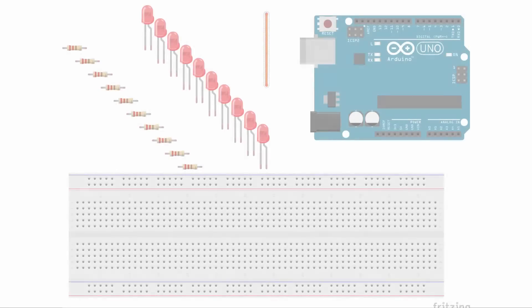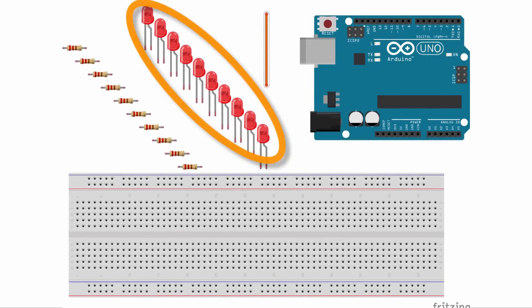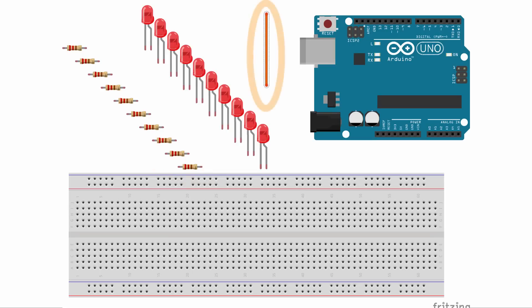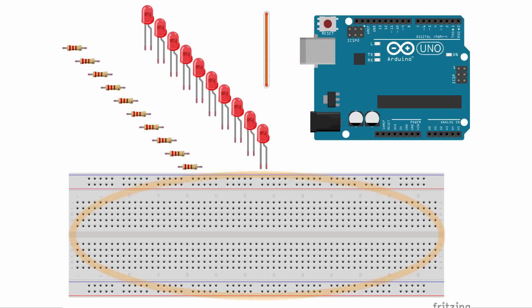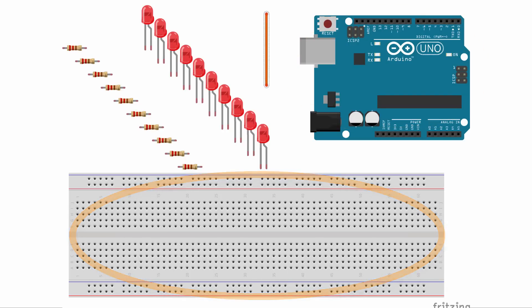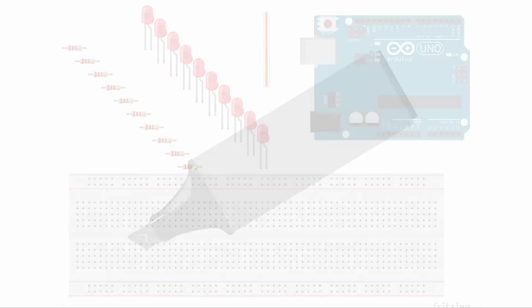For this tutorial, if you'd like to follow along, you'll need 10 light emitting diodes, 10 220-ohm resistors, one jumper wire, your Arduino board — I use the Arduino Uno and that's what I would recommend — a breadboard, and finally a Sharpie marker.